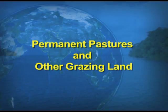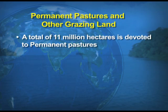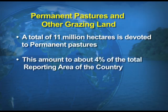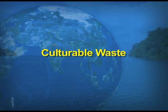The next category under land use is permanent pastures and other grazing land. A total of 11 million hectares is devoted to permanent pastures, and this amounts to 4% of the total reporting area of the country. The reporting area, as we have already discussed, is all the land uses put together. The next category is culturable wasteland.